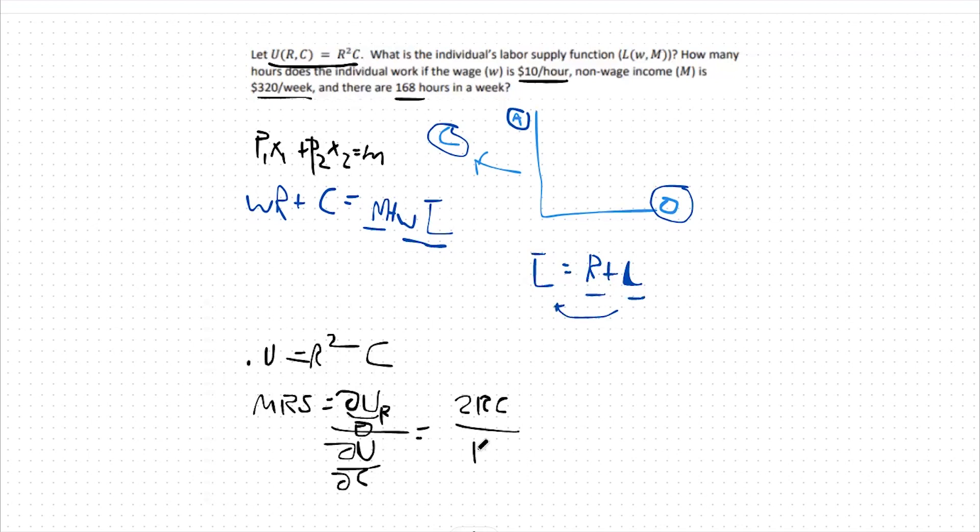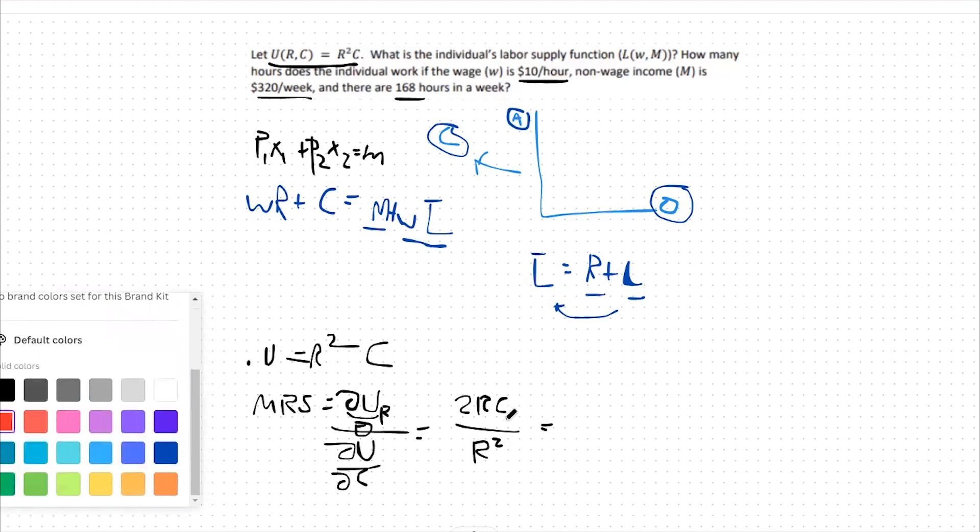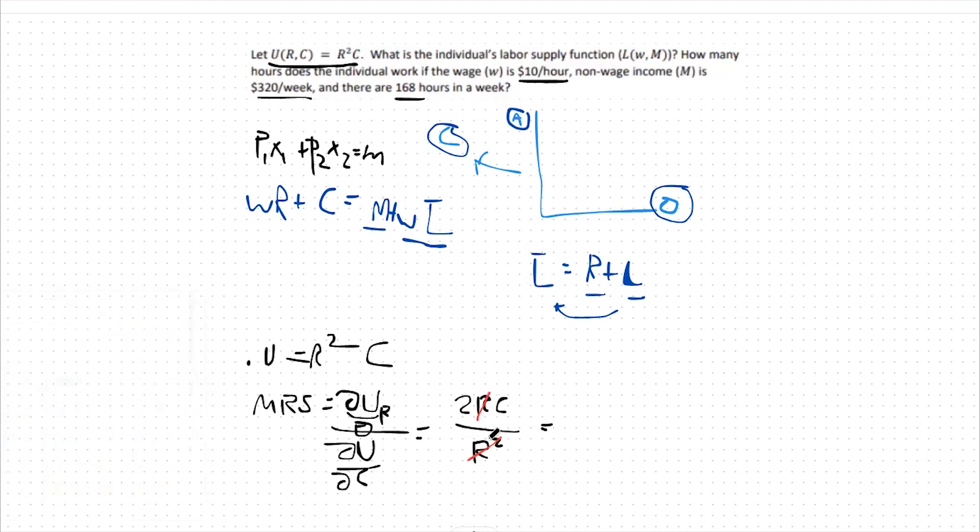I'm going to cancel out one of these R's and we're left with 2C over R. That's our MRS.